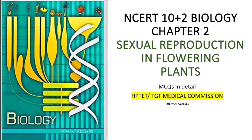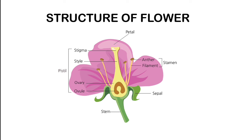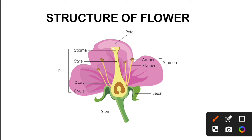This video will be helpful for HPDAT and medical students preparing for competitive exams and TGT Medical Commission. First, we will see the main important highlights of this chapter, after which we will also see some MCQs. We have the flower structure, which we have been seeing from small classes. First, we have sepals. In the sepals, there are petals — called pankhudi — which are the colorful part of the plant that attract insects.